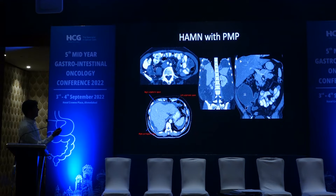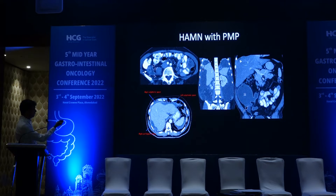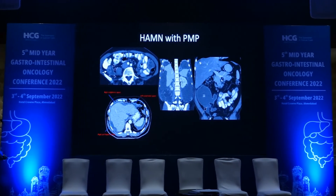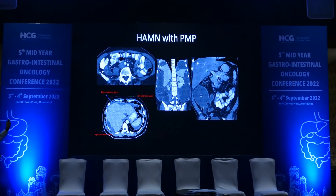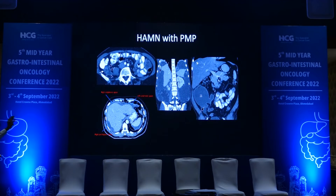This is why this is high grade: you can see the peri-appendiceal fat stranding and diffuse mucinous deposit across the entire peritoneal cavity. You can see surface undulations in the right sub-hepatic and sub-diaphragmatic regions, as well as on the left side. These three images are from three different patients.